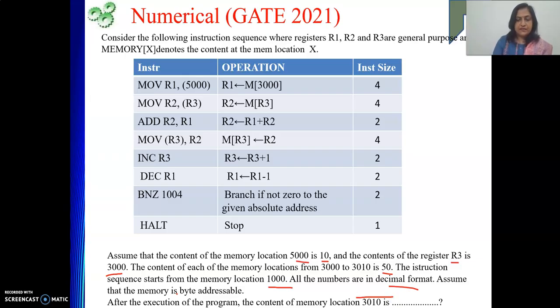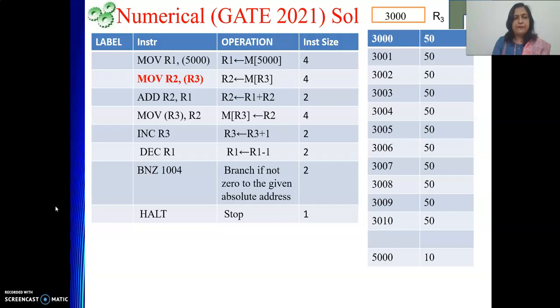This instruction sequence starts from the memory location 1000, so starting address is 1000. All the numbers are given in decimal format and the machine is byte addressable. So what we are supposed to do? After the execution of the program, the content of the memory location 3010 we need to find out.